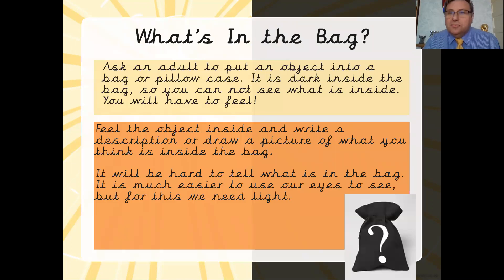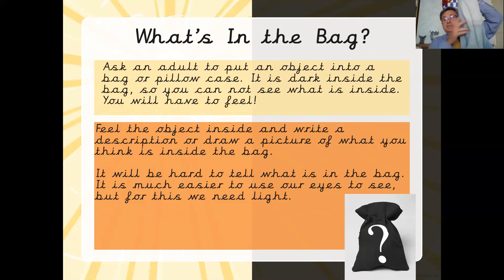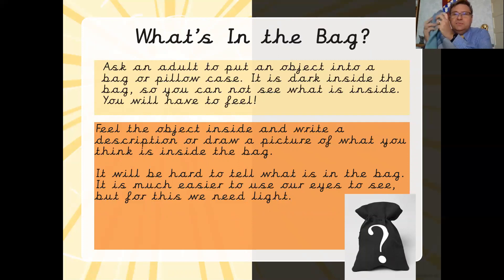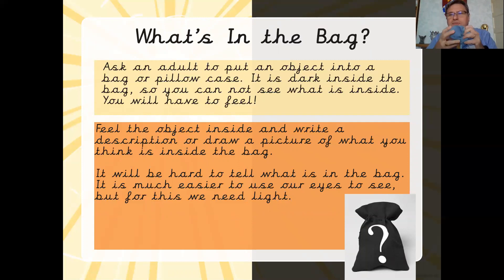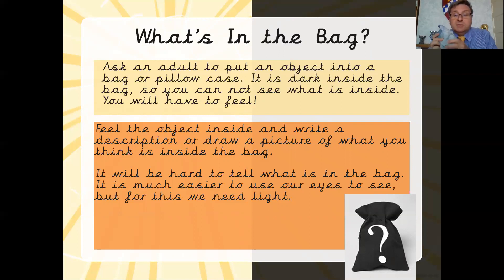Now we get onto an exercise for you to do, and you'll actually need an adult to help you with this. Get a bag like this - this is just a standard pillowcase. Get an adult or somebody else to hide an object into your pillowcase and then feel it. See if you can work out exactly what is in the bag just from the feel alone, because obviously there's no light getting in so you can't actually see what's there. When you've felt it, try to draw the object or describe it - write down a quick brief description of exactly what you think it is, what colours you might think it is. It's much harder to tell what is in the bag until you've actually got some light.